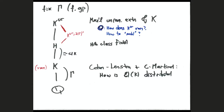One of the classical problems is Cohen-Lunstra and Cohen-Martinet, which asks how the class group of K is distributed. The first time I read about this problem was varying over imaginary quadratic fields. By 'distributed,' you can pick any statistic of a finite group and ask how it varies — for instance, the isomorphism class, the P-part, the torsion, or the moments, meaning numbers of surjections to some given group.